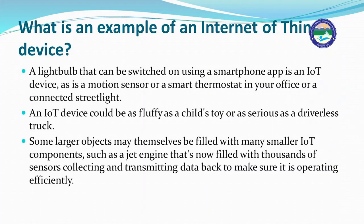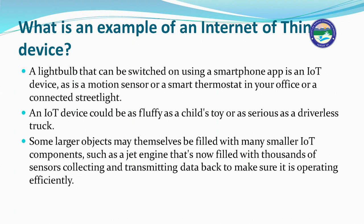What is an example of an IoT device? A light bulb that can be switched on using a smartphone app is an example of IoT. The Alexa device at home is another example — if we instruct Alexa to switch on a light bulb and it does, it is an IoT-based device. An IoT device could be as simple as a child's toy or as serious as a driverless truck. Some large objects may themselves contain many smaller IoT components — such as a jet engine filled with thousands of sensors collecting and transmitting data to ensure it operates efficiently.